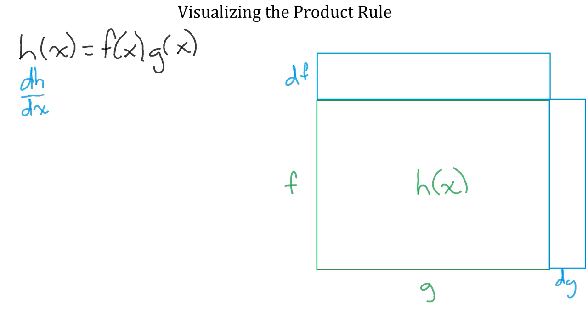The combined area of these new rectangles, then, is the change in the area of the rectangle. So it's the change in h. This rectangle is df times g, and this other rectangle is dg times f. Finally, this small rectangle here is df times dg. That means that dh equals df times g, plus dg times f, plus df times dg.